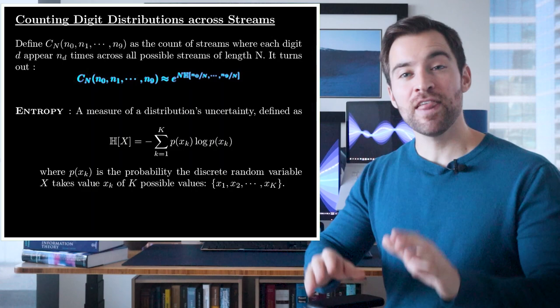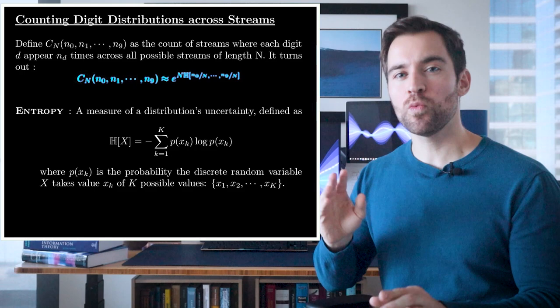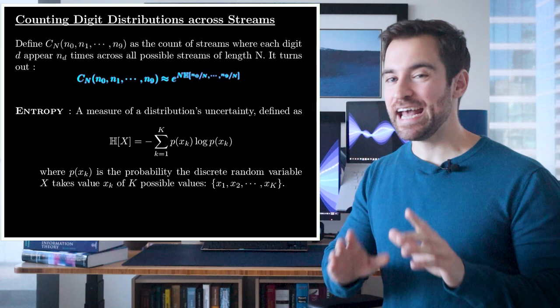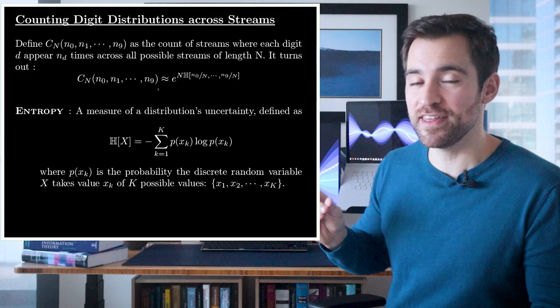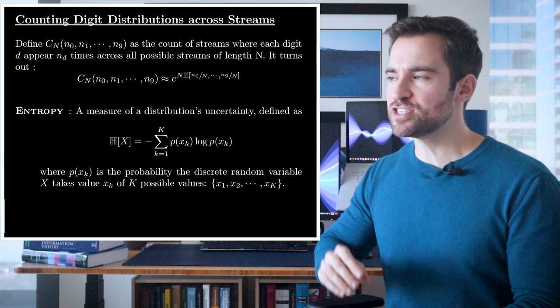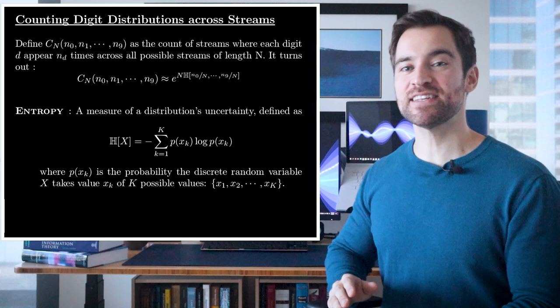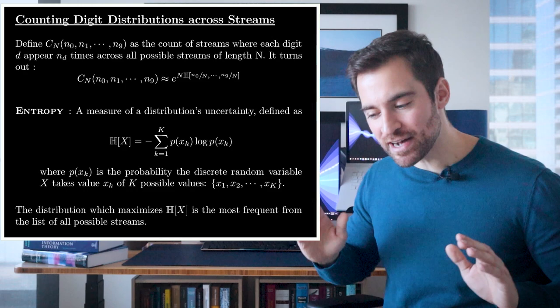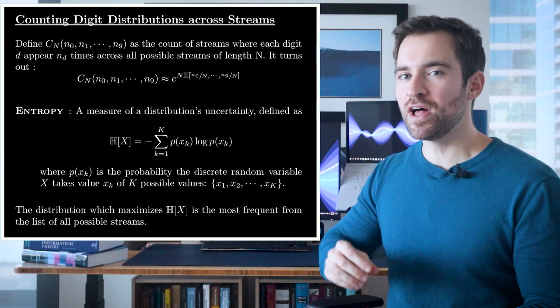What this expression says is, if you want to know approximately how many streams have digits with some given counts, then turn those counts into probabilities and calculate their entropy. Then the number of streams with those counts will be approximately e to N times that entropy. First, this is super convenient and simple and a bit unexpected. And second, if you're selecting the distribution which maximizes entropy, you're picking the distribution which shows up most frequently out of all possible streams.